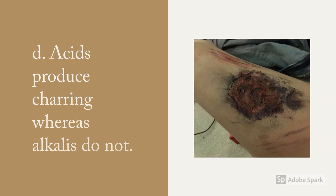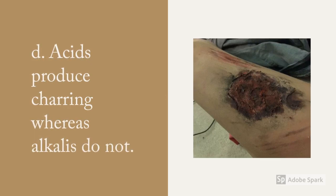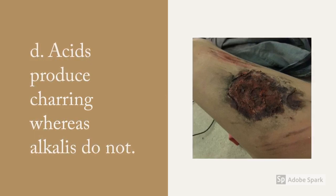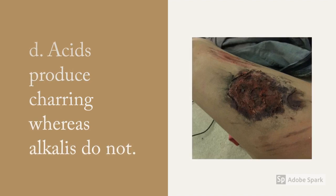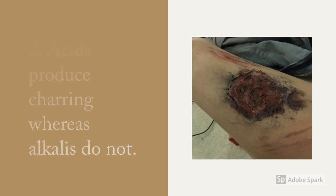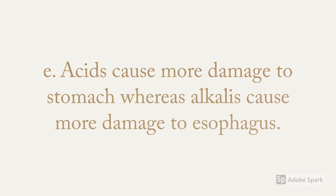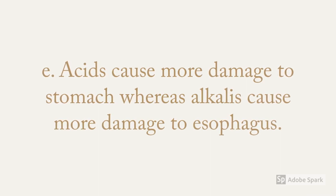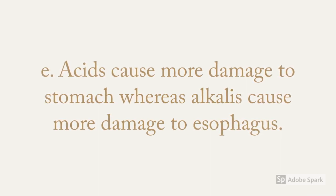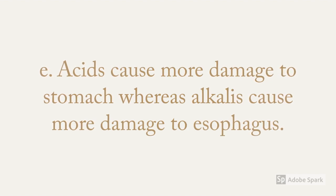Acids produce charring, which results from incomplete combustion of organic material, whereas alkalis do not. However, alkalis cause more severe injuries. It is quite interesting to know that acids and alkalis, despite both being corrosive poisons, have different patterns of injury: acids cause more damage to the stomach, whereas alkalis cause more damage to the esophagus.